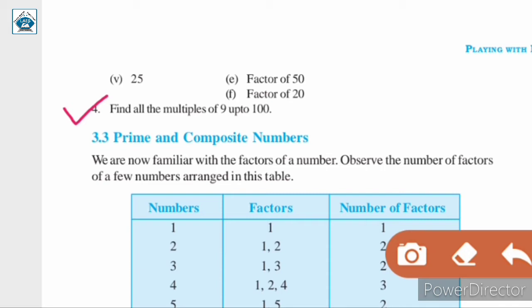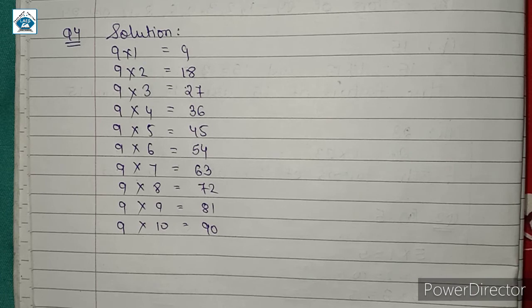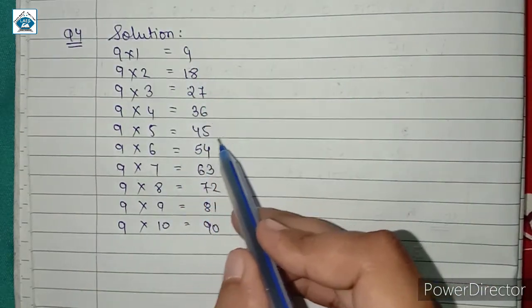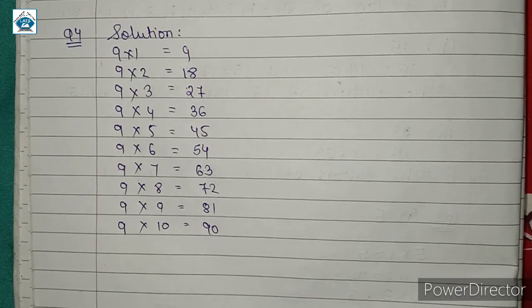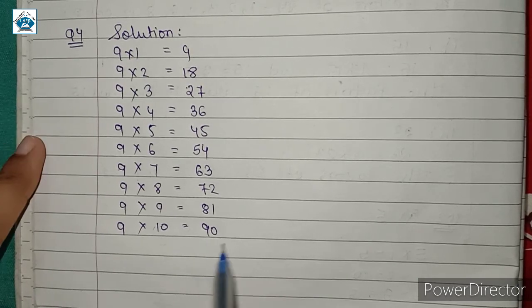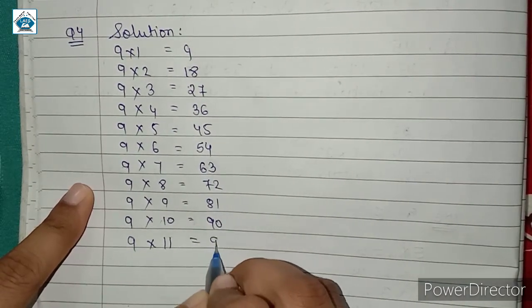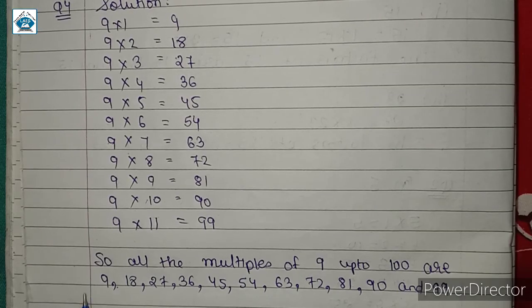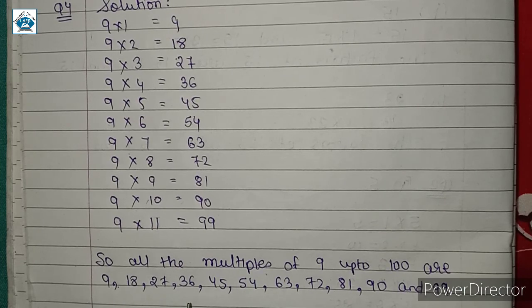Question 4: Find all the multiples of 9 up to 100. We know the table of 9: 9, 18, 27, 36, 45, 54, 63, 72, 81, 90, and 99. Therefore, all the multiples of 9 up to 100 are: 9, 18, 27, 36, 45, 54, 63, 72, 81, 90, and 99.